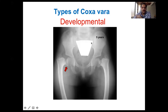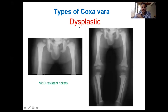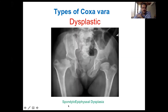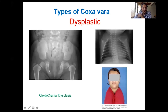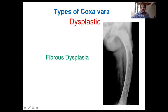The hallmark of developmental coxa vara is the presence of Fairbank's triangle. The dysplastic type is associated with a bone pathology — for example, vitamin D-resistant rickets (hypophosphatemic rickets) where ricketic manifestations are apparent, or spondylometaphyseal dysplasia with a mushroom-shaped epiphysis on both sides and affection of the metaphyses and vertebrae, or cleidocranial dysplasia with bilateral coxa vara and absent or deficient clavicles allowing the patient to rotate the shoulders forward.